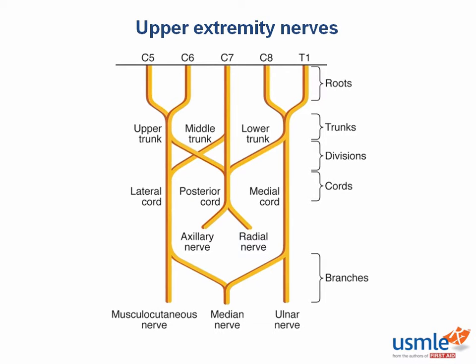Now we're about to dive into the heart of musculoskeletal anatomy for step one, the upper extremities. Let's start with the anatomy of the brachial plexus, which serves as a good conceptual foundation for understanding the rest of the upper limb.